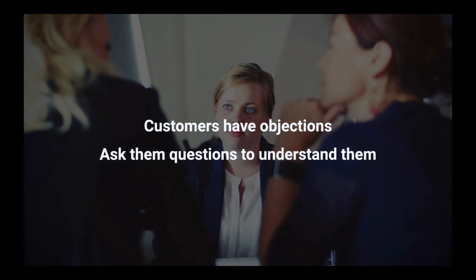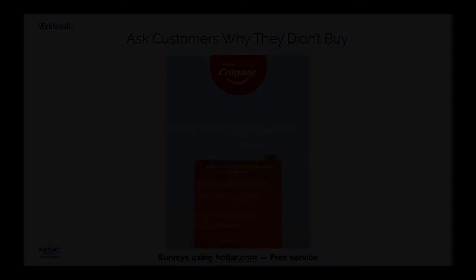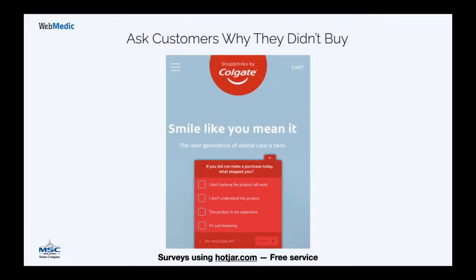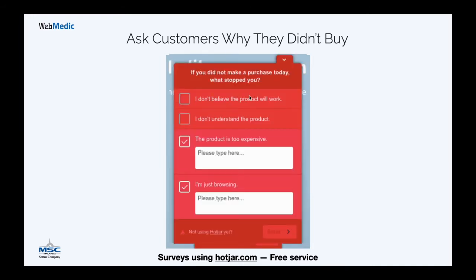We start with objections. Your customers are people, and those people have objections in their minds — the only way to know them is by asking. Here's a free tool called Hotjar.com; Colgate is using it in this example, asking their visitors: 'If you didn't make a purchase today, what stopped you?' People will tell you — they think it's too expensive or they're just browsing — and you collect that information to improve your marketing and increase your sales without more advertising.